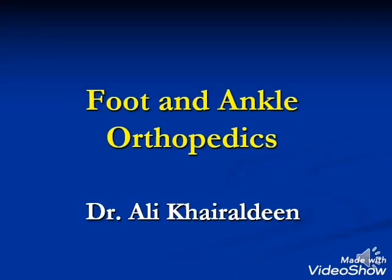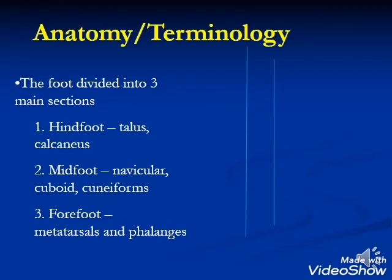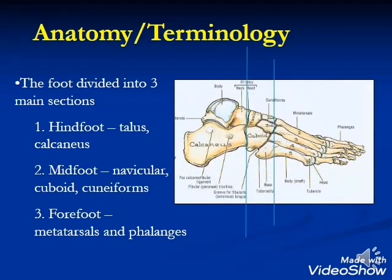Today I would like to talk about foot and ankle orthopedic problems. First of all, we must know the anatomy. The foot is divided into three main sections. The first is the hindfoot, formed by the calcaneus and the talus. The second is the midfoot, formed by the cuboid bone, naviculum, and the cuneiform bones. The third is the forefoot, formed by the metatarsals and the phalanges.